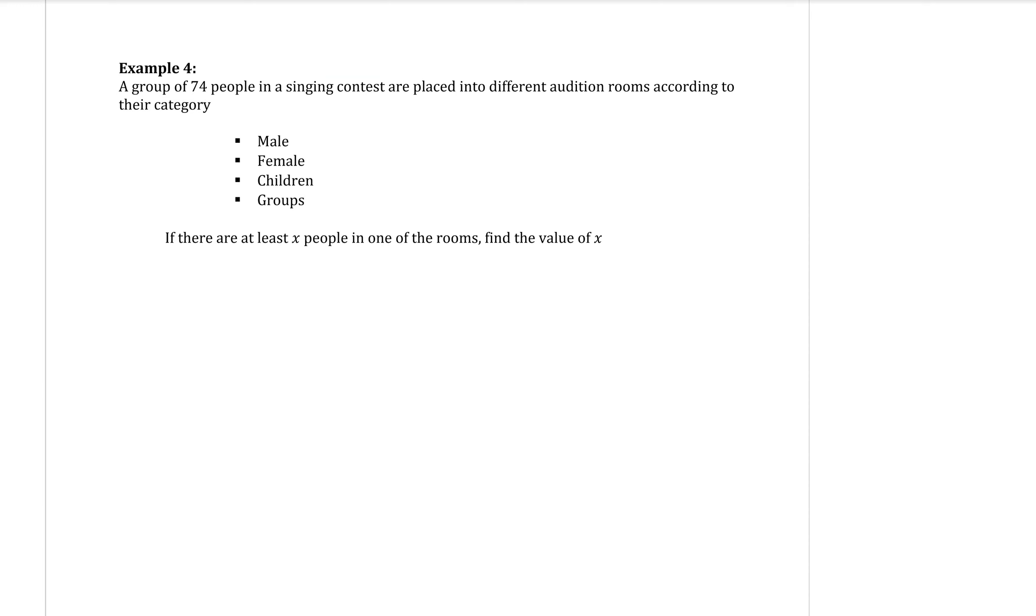And number four. A group of 74 people in a singing contest are placed into different audition rooms according to their category: Male, female, children and groups. Probably better to think of this as not 74 people because it would be 74 items. Because the groups, you wouldn't be counting all the different people in the group. So let's say there is 74 items in this contest. If there are at least X people in one of the rooms, find the value of X.